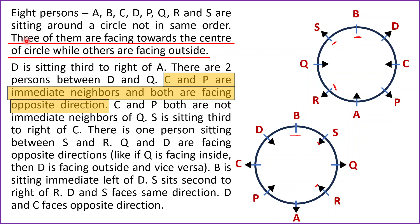Now we come back to the underlined portion: three of them are facing towards the center, meaning only three people are allowed to face the center. In Case 1, Q, C, and A are facing inside — that's exactly three, so the rest face outside, and B is also facing outside. In Case 2, D, S, R, and P are all facing towards the center — that's four persons, which contradicts the condition. So Case 2 is eliminated.